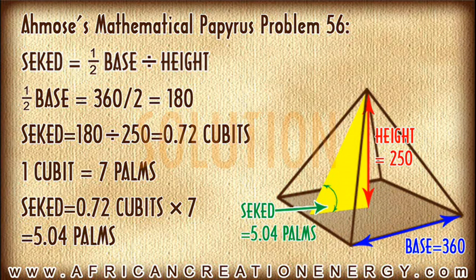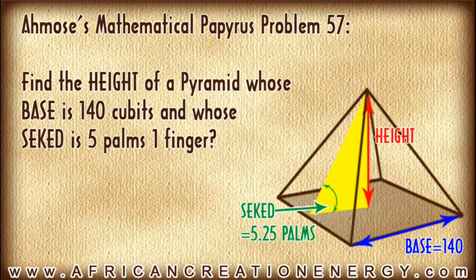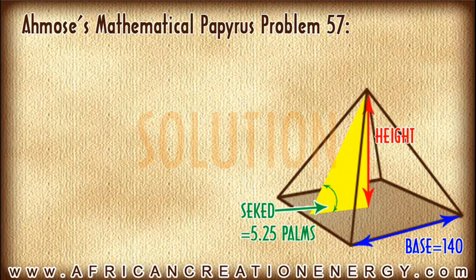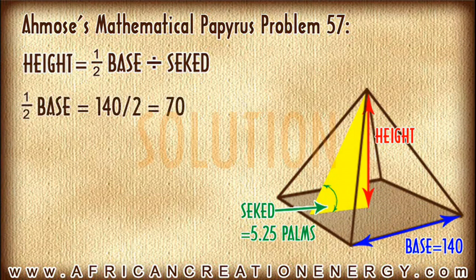Let's tackle problem 57 from Ahmose's mathematical papyrus. Problem 57 states: find the height of a pyramid whose base is 140 cubits and whose Seqed is 5 palms, 1 finger. For this problem, instead of using the height and the base to find the Seqed, you're given the Seqed and the base and asked to find the height. We can rewrite our equation as: height equals half the base divided by the Seqed. Half the base would be 140 divided by 2, which is 70.